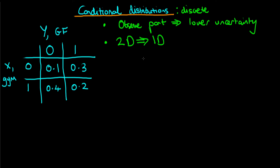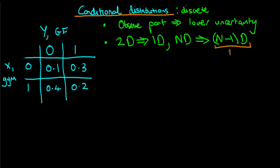Intuitively we still have uncertainty in the part which we haven't observed yet. More generally, conditional distributions are a way of going from an n-dimensional probability distribution to an n-1 dimensional probability distribution. What I mean by going from n-d to n-1-d is that the n-1 dimensional thing on the right-hand side is our conditional distribution. In the 2D to 1D case, that one-dimensional distribution is also a conditional distribution.